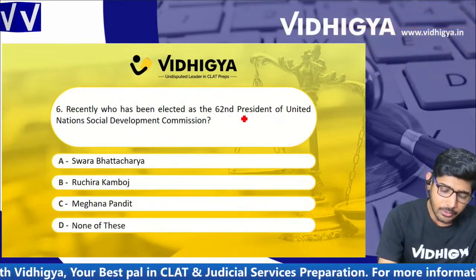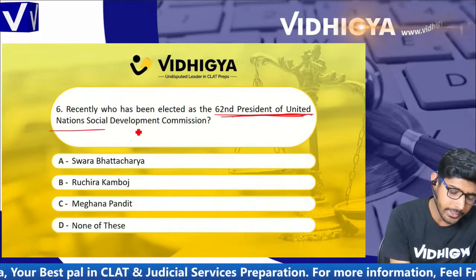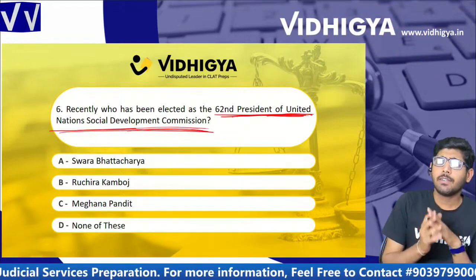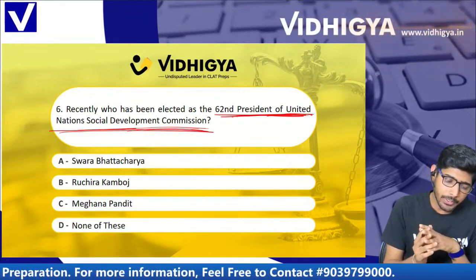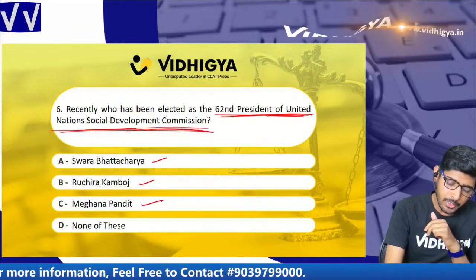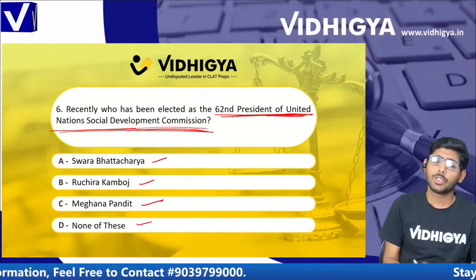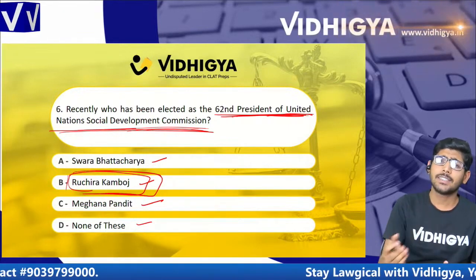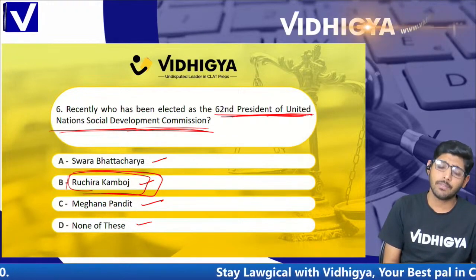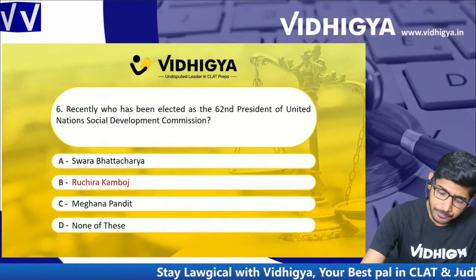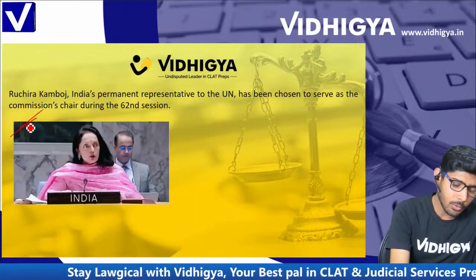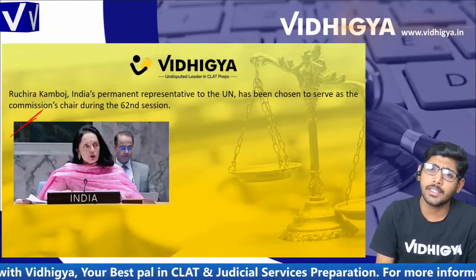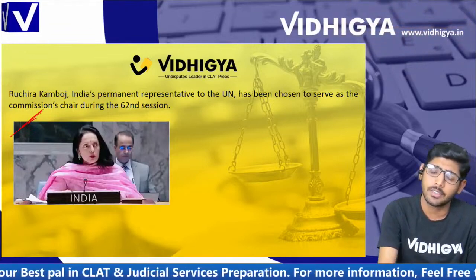Recently, who has been elected as the 62nd President of the United Nations Social Development Commission? Options are: Swara Bhattacharya, Ruchira Kamboj, Meghna Pandit, and None of the Above. The correct answer is Ruchira Kamboj, who has recently been appointed as the 62nd President of the United Nations Social Development Commission. She is India's permanent representative to the United Nations.